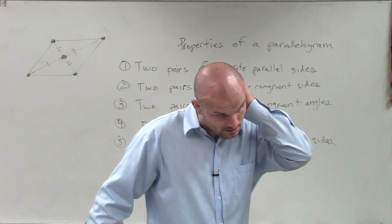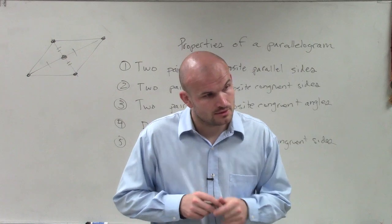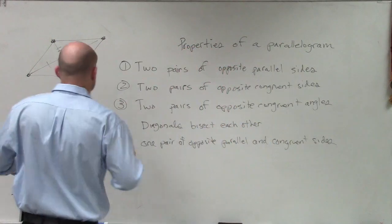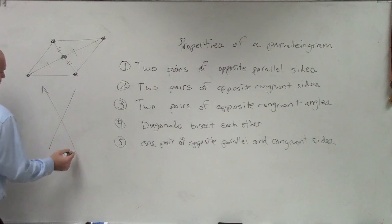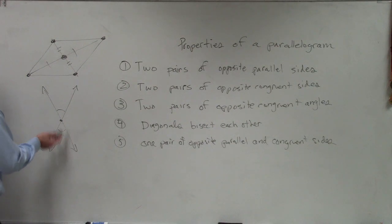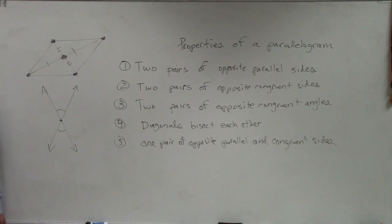Student asks: When two angles are vertical to each other, are they supplementary? Teacher responds: Remember, these are vertical angles, right? The intersection of two lines. Vertical angles are opposite each other, share a vertex, but don't share a side. Are they supplementary, or do they equal each other?